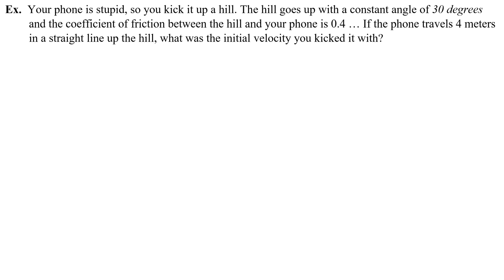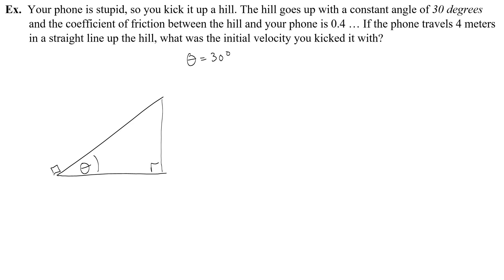Your phone is stupid, so you kick it up a hill. The hill goes up with a constant angle of 30 degrees, and the coefficient of friction between the hill and your phone is 0.4. Here is your stupid phone going up a hill with a constant angle — not a curving hill, just a regular inclined plane where theta is 30 degrees. You know that it travels 4 meters in a straight line up the hill — that's the distance d. It goes 4 meters up the hill and comes to a stop. The initial velocity is what we're going to find.